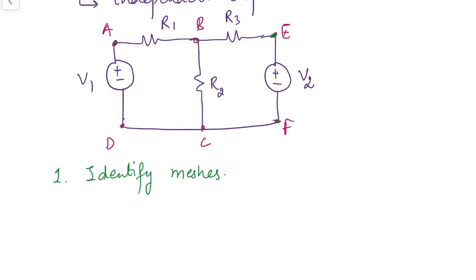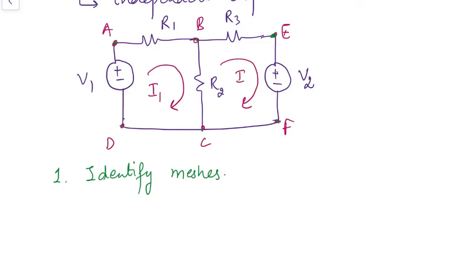Instead of assigning branch currents as done previously, in mesh analysis we assign mesh currents. Since we have two meshes, we assign mesh currents: let the first mesh have current I1 and the second have I2. The direction of these mesh currents is assumed arbitrarily — you can assume both clockwise, both anti-clockwise, or one of each. Here I have assumed both currents are clockwise.